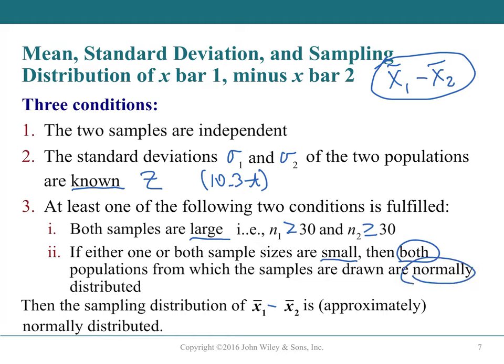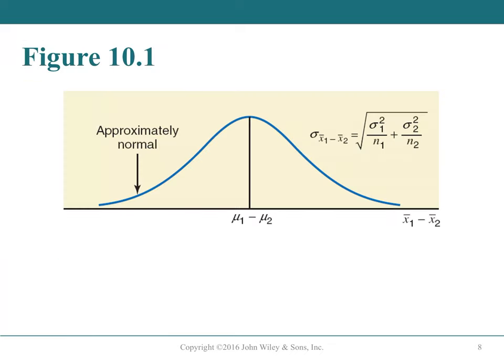If either sample size is less than 30, both populations must be stated as normal. When these conditions are met, the sampling distribution of the difference of the means is approximately normally distributed, and we can use the normal distribution. A rough sketch shows the distribution of x̄₁ - x̄₂ centered near zero with a standard deviation.